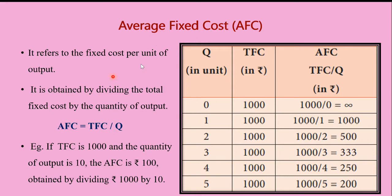Average fixed cost is obtained by dividing the total fixed cost by the quantity of output. Mathematically, AFC = TFC / Q. Average fixed cost refers to the fixed cost per unit of output — it is the cost incurred for the production of one unit of a commodity. For example, if the total fixed cost is 1000 and the quantity of output is 10, then AFC = 1000 / 10 = 100, so the cost of producing one unit is rupees 100.